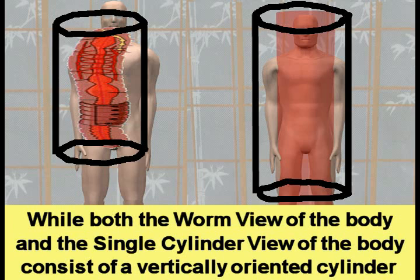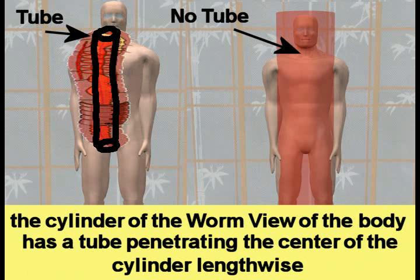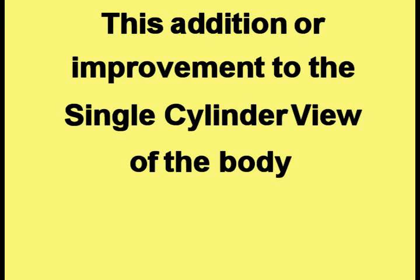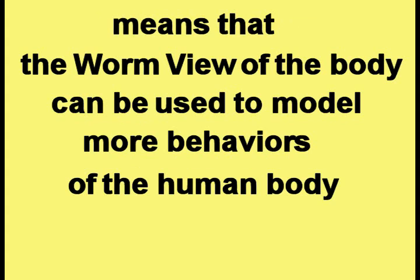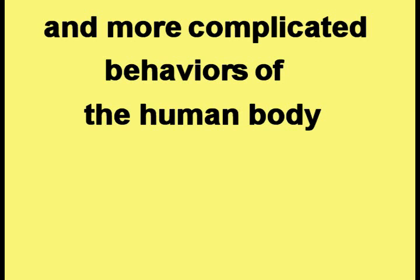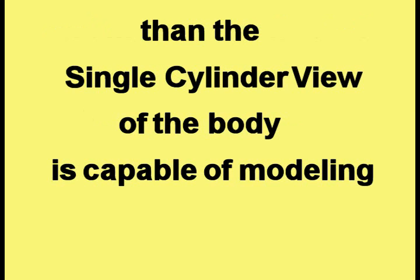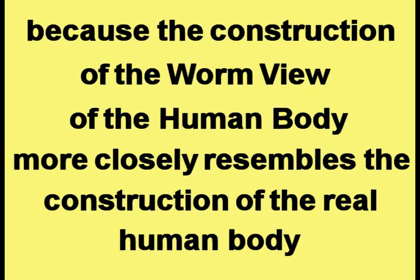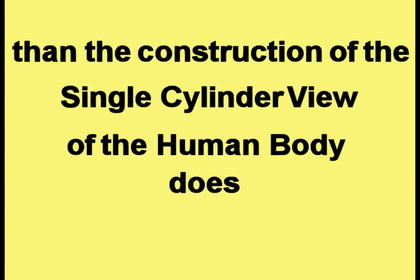While both views consist of a vertically oriented cylinder, the cylinder of the worm view has a tube penetrating the center of the cylinder lengthwise with holes at either end. This addition means that the worm view can be used to model more behaviors of the human body, and more complicated behaviors, than the single cylinder view is capable of modeling. The worm view of the human body is superior because its construction more closely resembles the construction of the real human body.